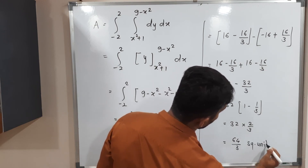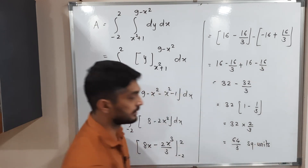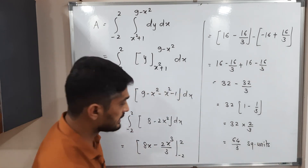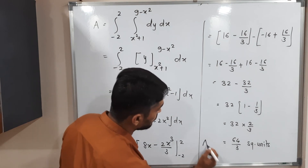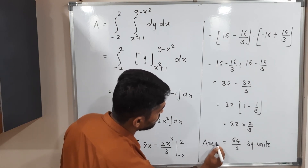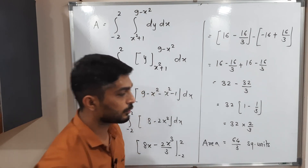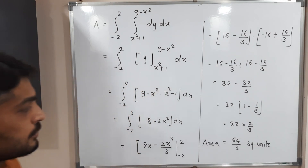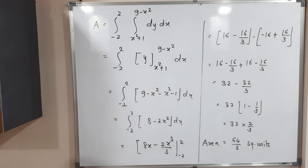So the area is 64/3 square units. We should mention square units since this is an area calculation. The example is complete.